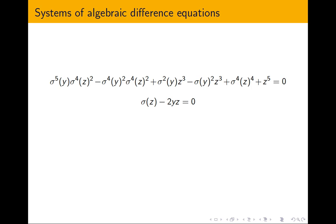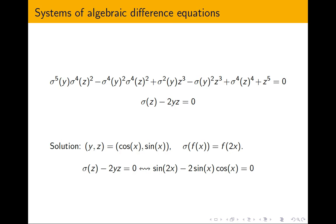To evaluate an expression like this, you need to plug in values for y and z, but you also need to specialize sigma — you need to say what sigma is. In this example, if you plug in cos(x) for y, sin(x) for z, and sigma maps f(x) to f(2x), then this tuple is a solution to this system of algebraic difference equations.